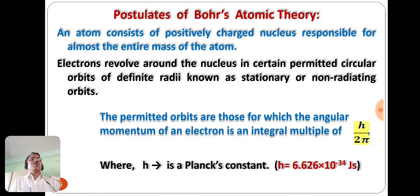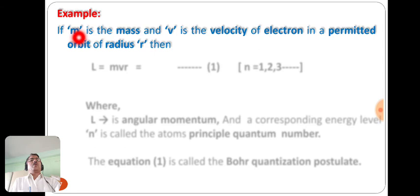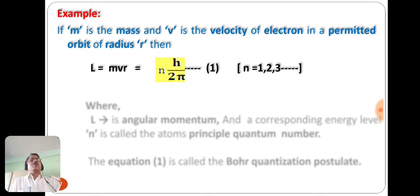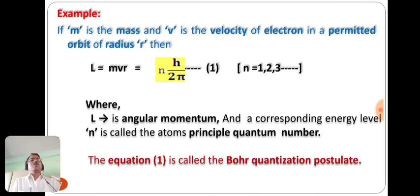If m is the mass and v is the velocity of an electron in a permitted orbit of radius r, then the angular momentum L = mvr = nh/2π, where n is the principal quantum number with values 1, 2, 3, etc. This equation is called Bohr's quantization postulate.